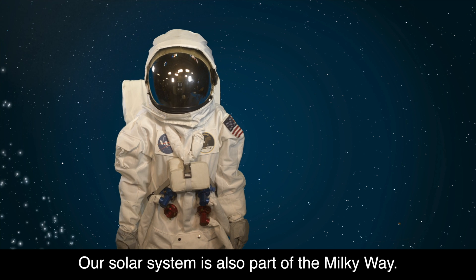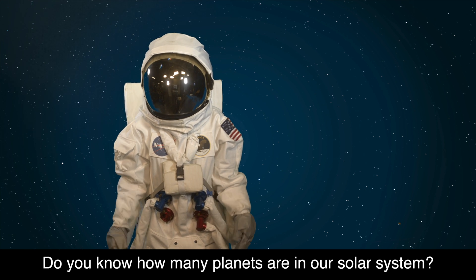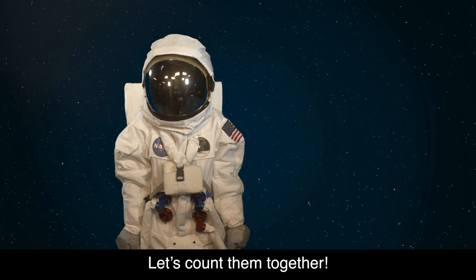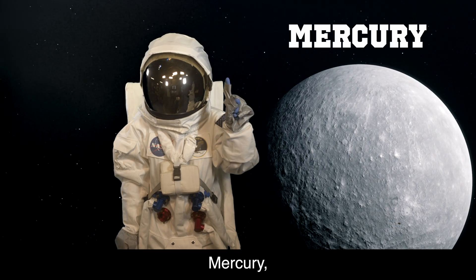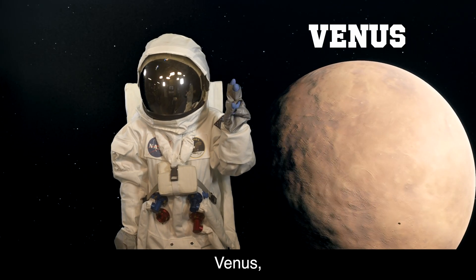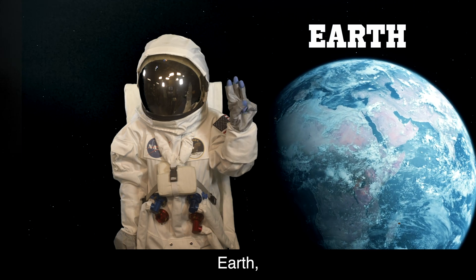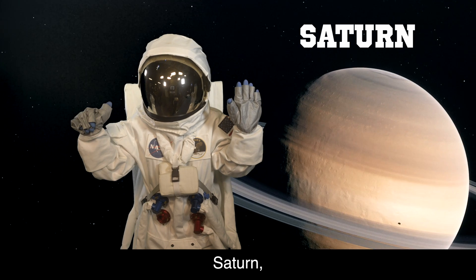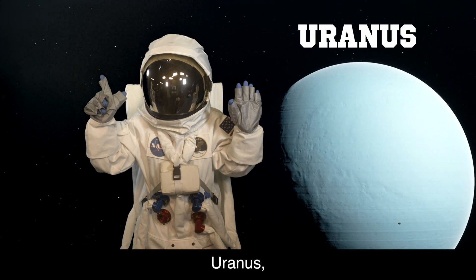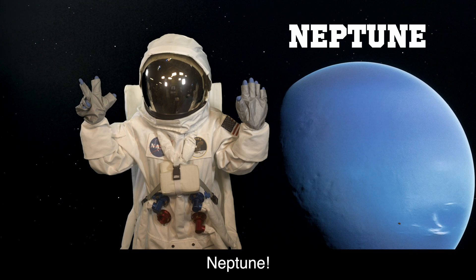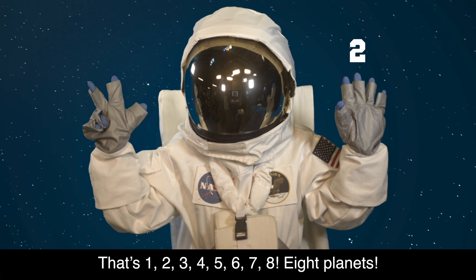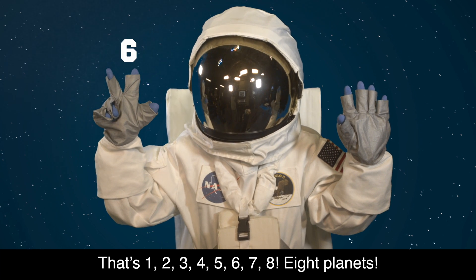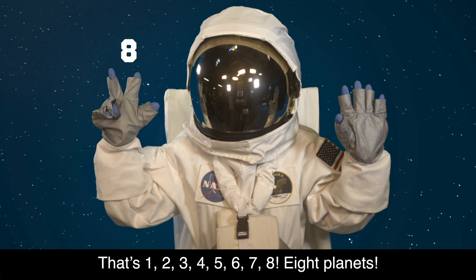Our solar system is also part of the Milky Way. Do you know how many planets are in our solar system? Let's count them together. Mercury, Venus, Earth, Mars, Jupiter, Saturn, Uranus and Neptune. That's one, two, three, four, five, six, seven, eight. Eight planets.